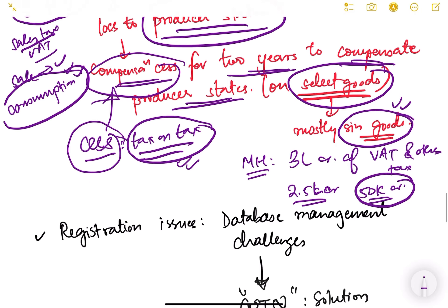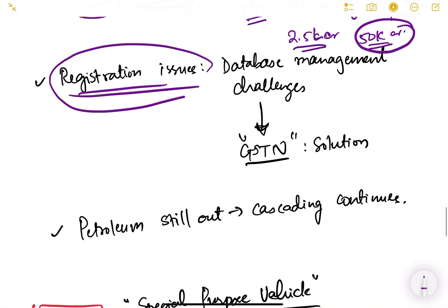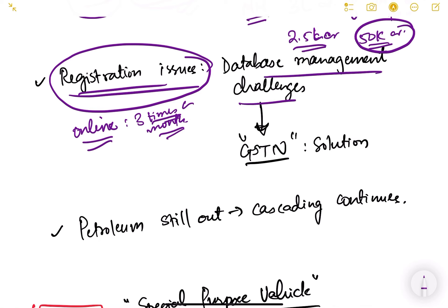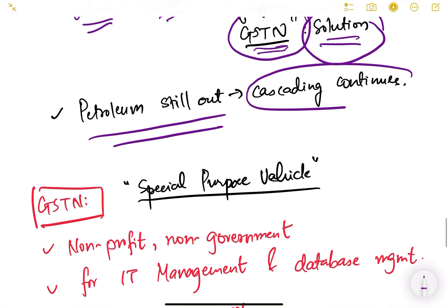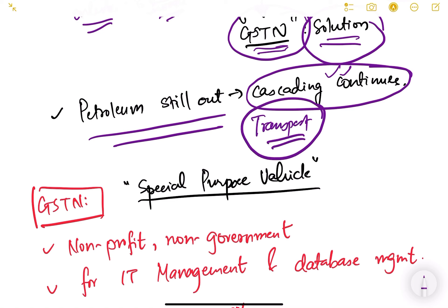Another challenge is registration and compliance — GST is a completely online system and companies must file returns three times a month, uploading invoices. Managing such a huge database for a country of 1.4 billion people and countless daily transactions is a major challenge. The solution was the GSTN system. Additionally, petroleum products are still outside GST, so taxes paid on petrol and diesel for transportation are included in production costs, on which GST is again imposed — cascading continues for petroleum, though it has reduced overall.